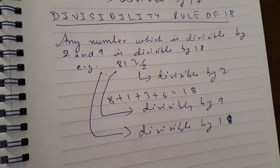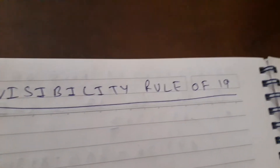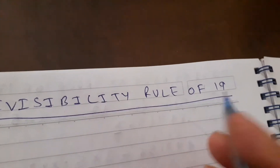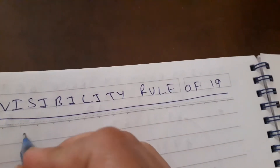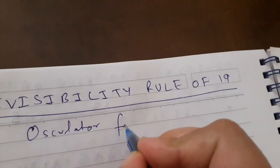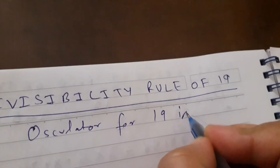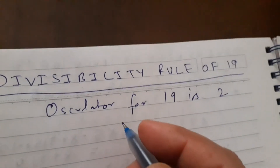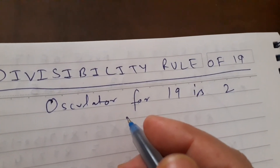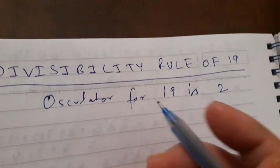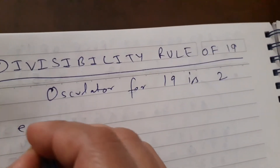Let's move to 19. What is the divisibility rule for 19? First, you have to remember: the oscillator for 19 is 2. The rule process is the same as what we did for the divisibility rule of 13.